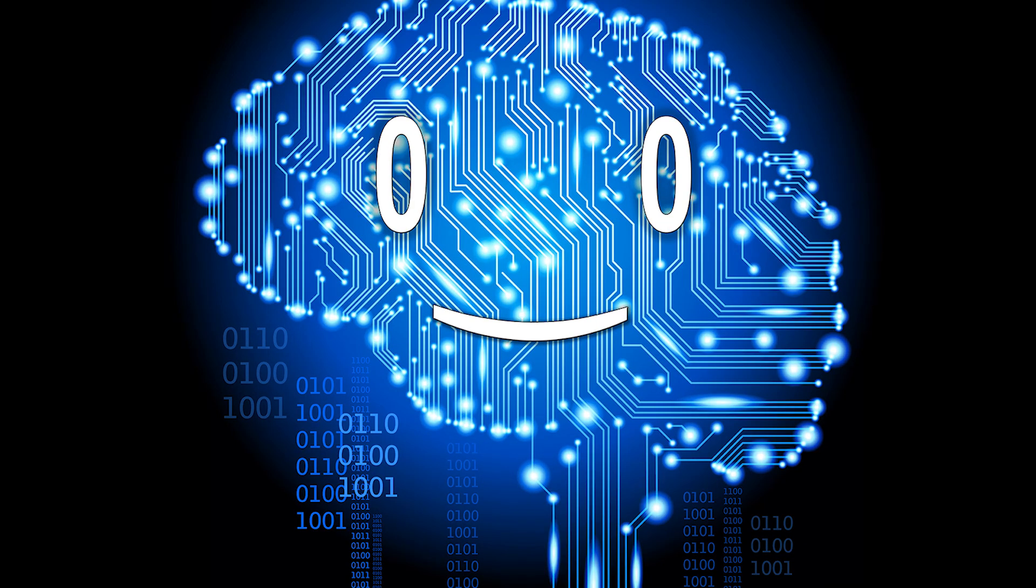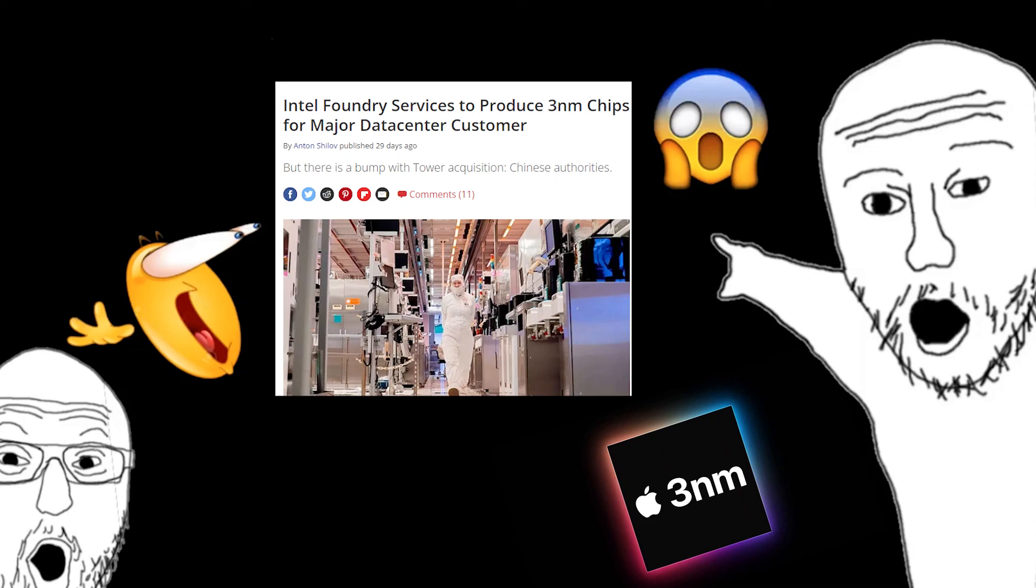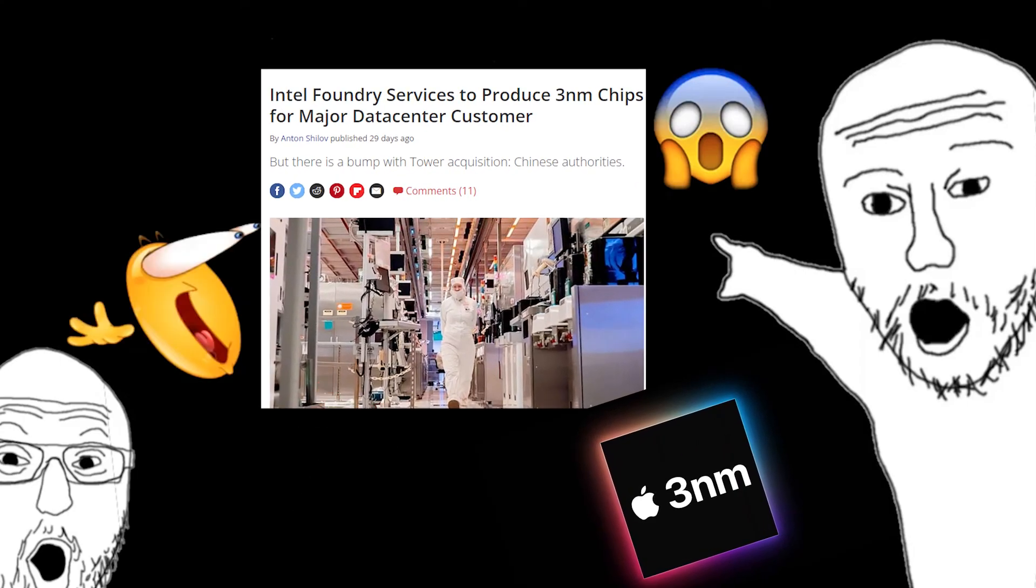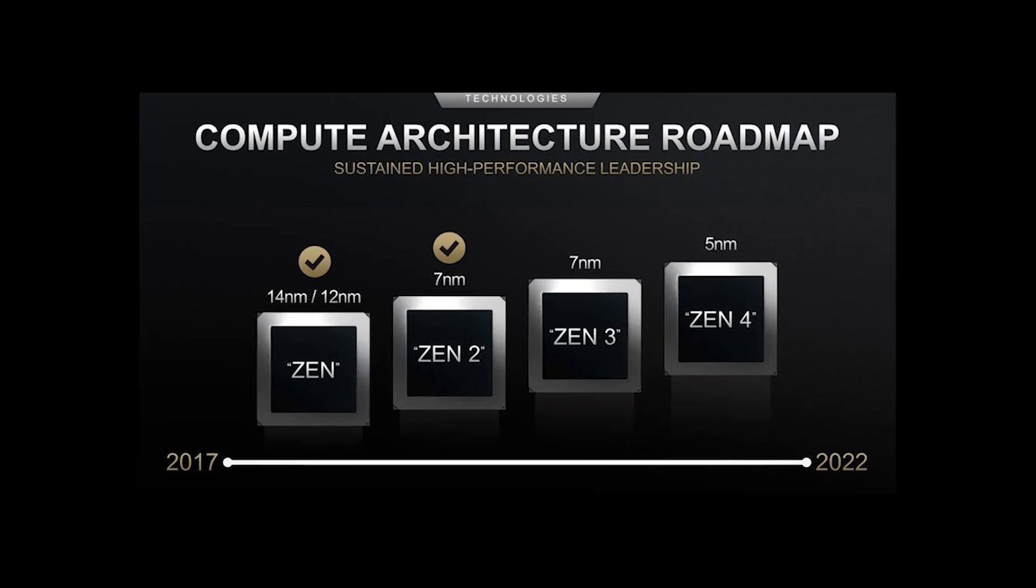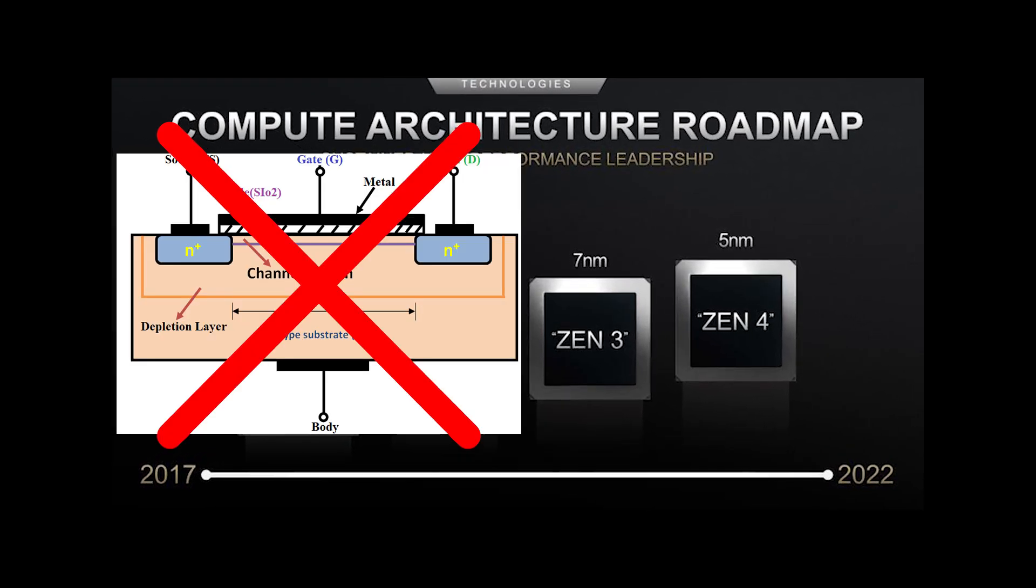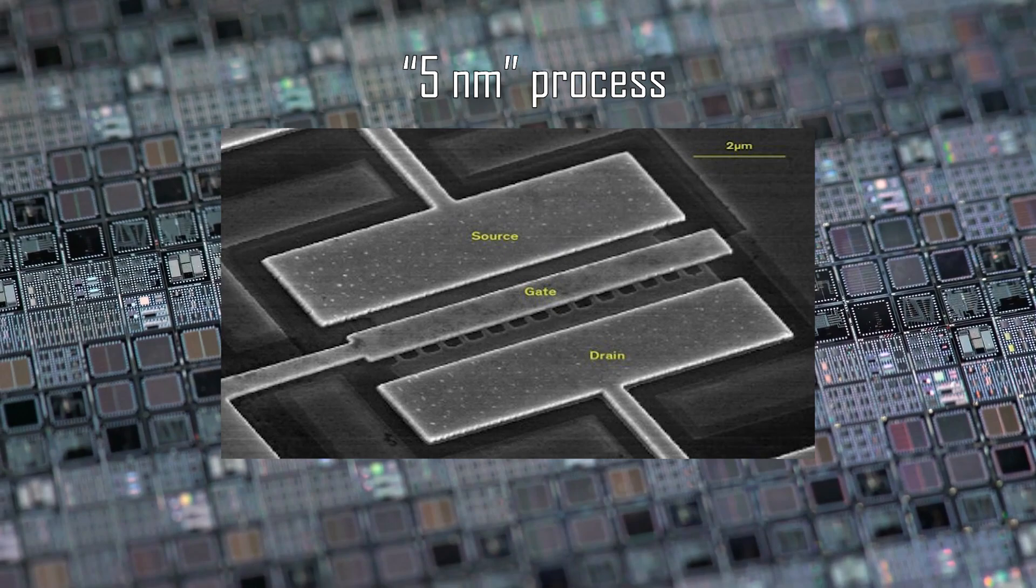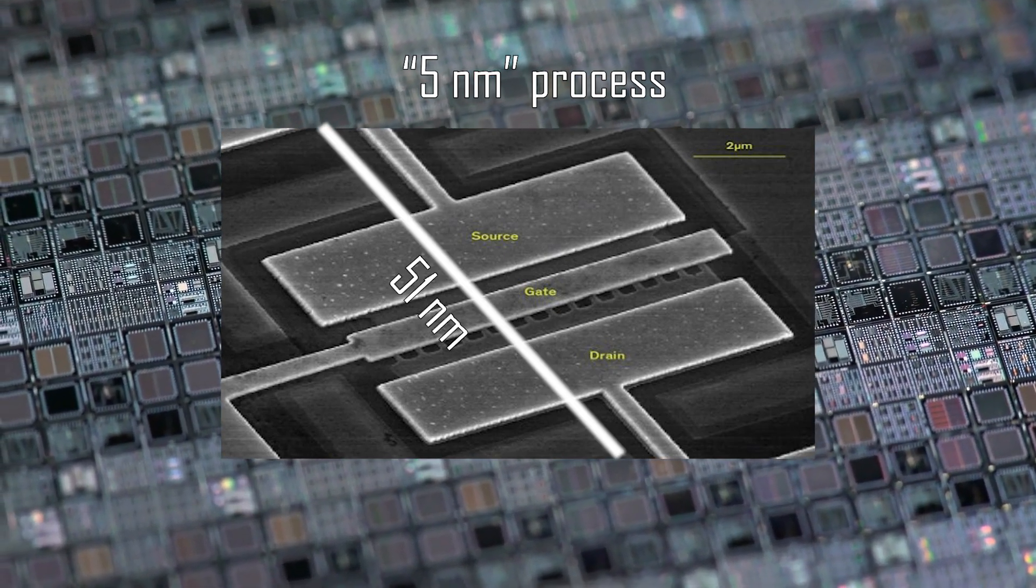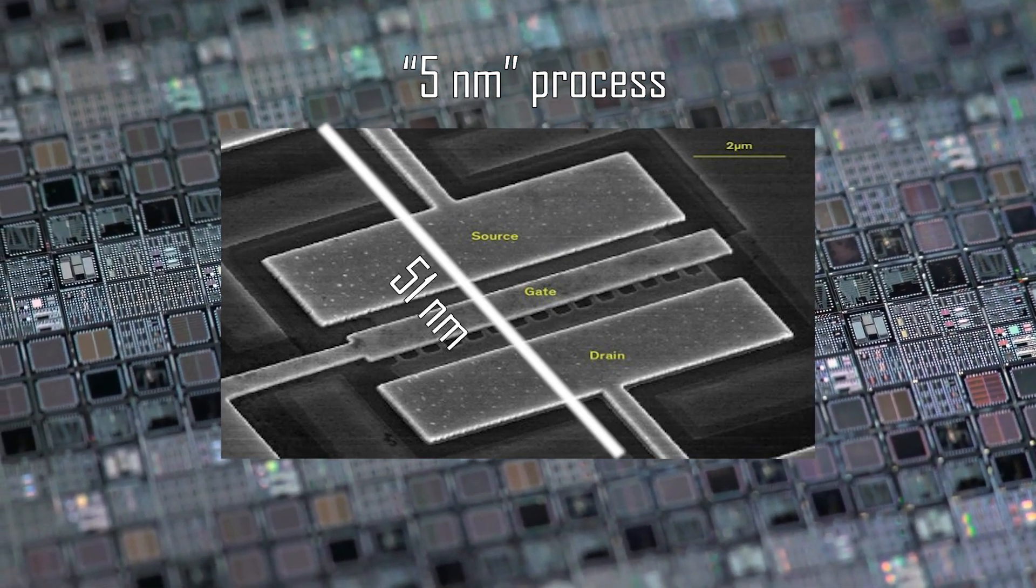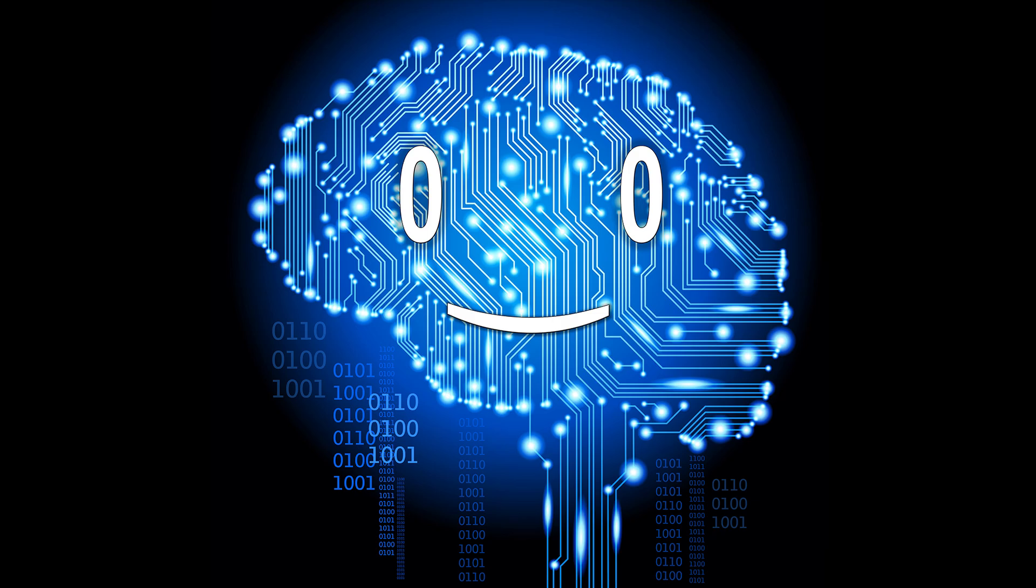But you see, this nanometer process size is just a marketing clickbait term made by microchip manufacturers, as the term 5 nanometers has no relation to any actual physical features. A 5 nanometers node is expected to have a contacted gate pitch of 51 nanometers. Yet even those sizes are ridiculously small.